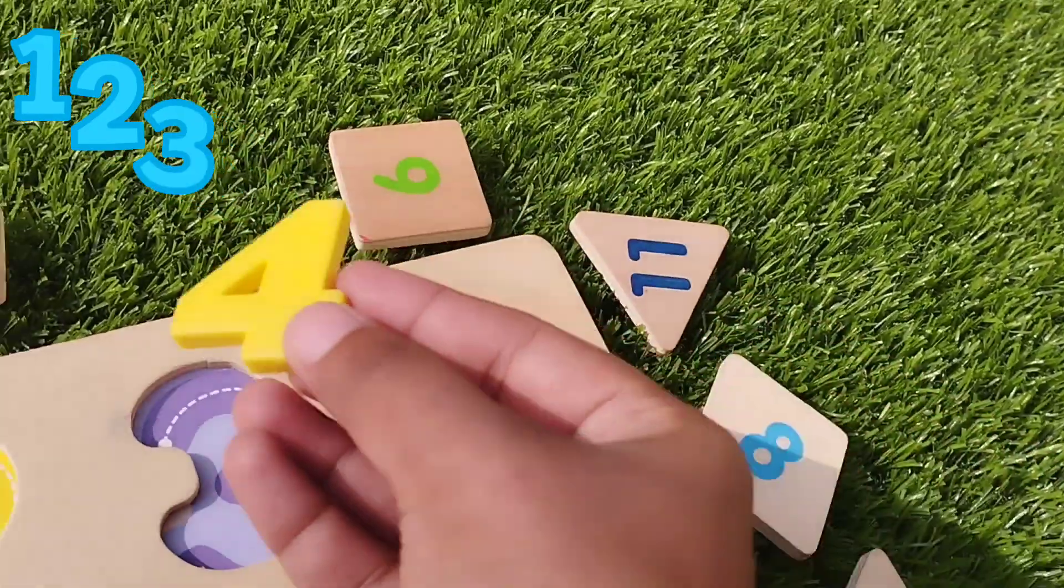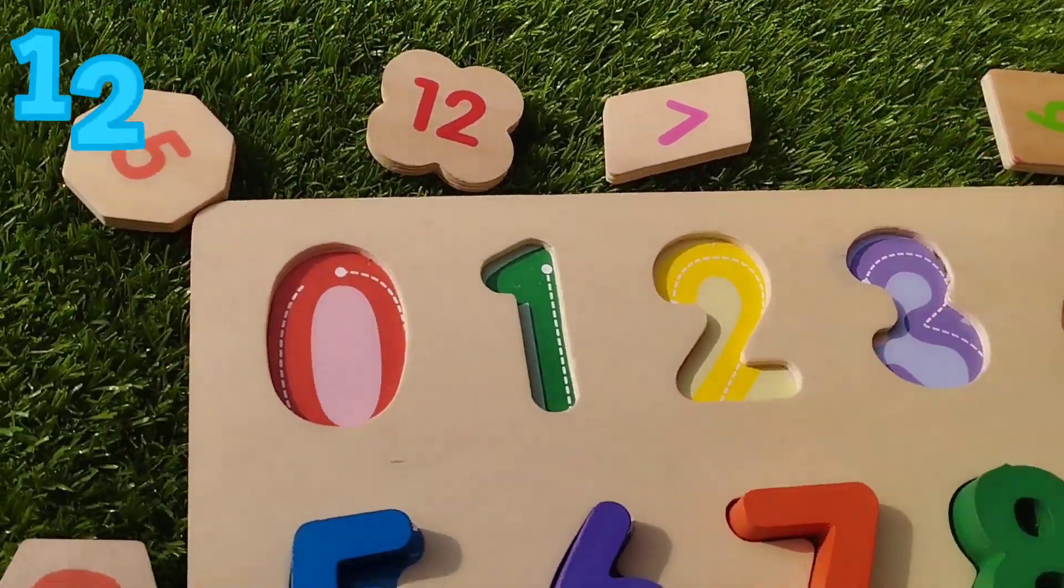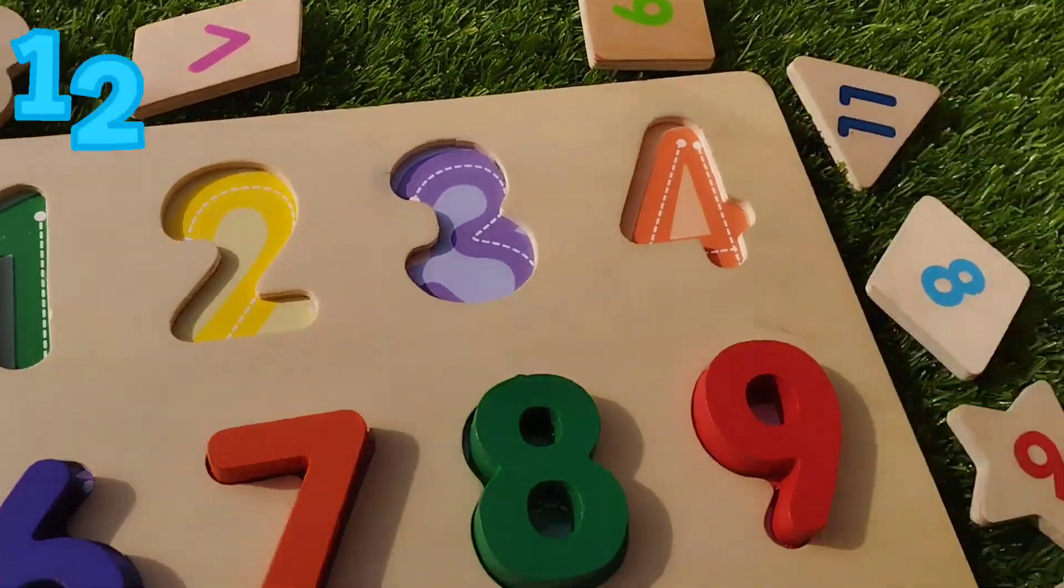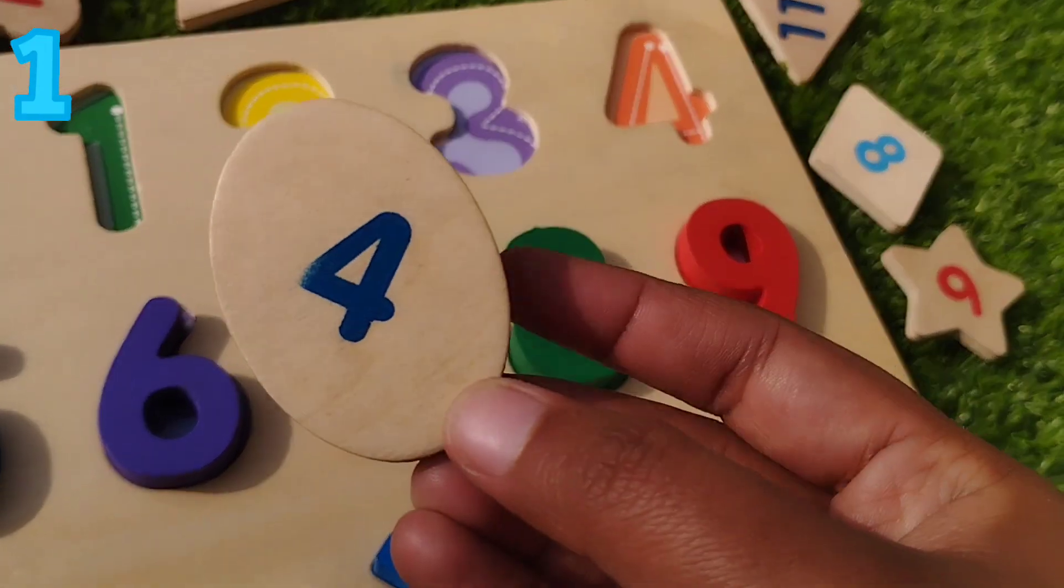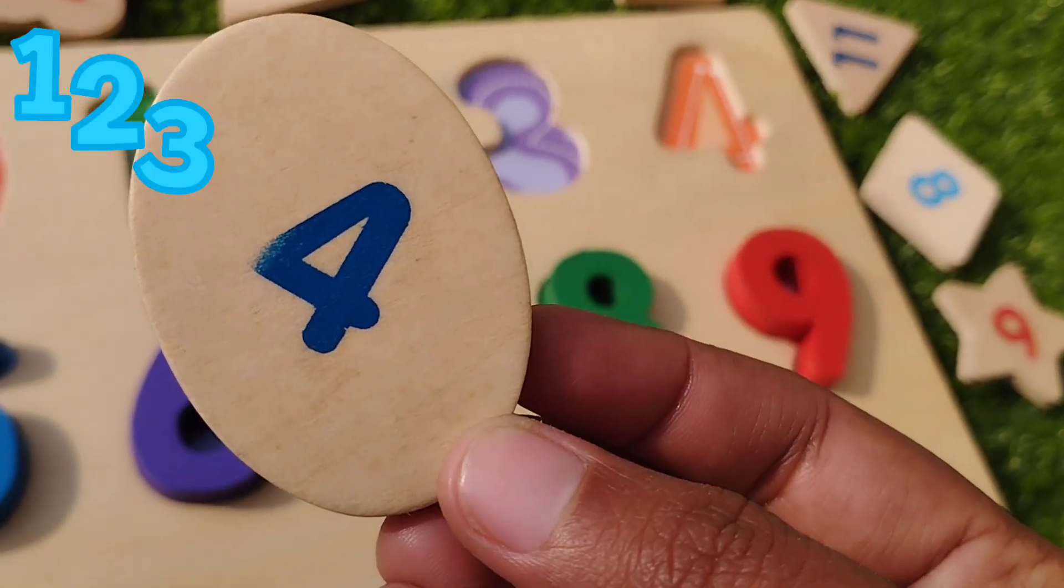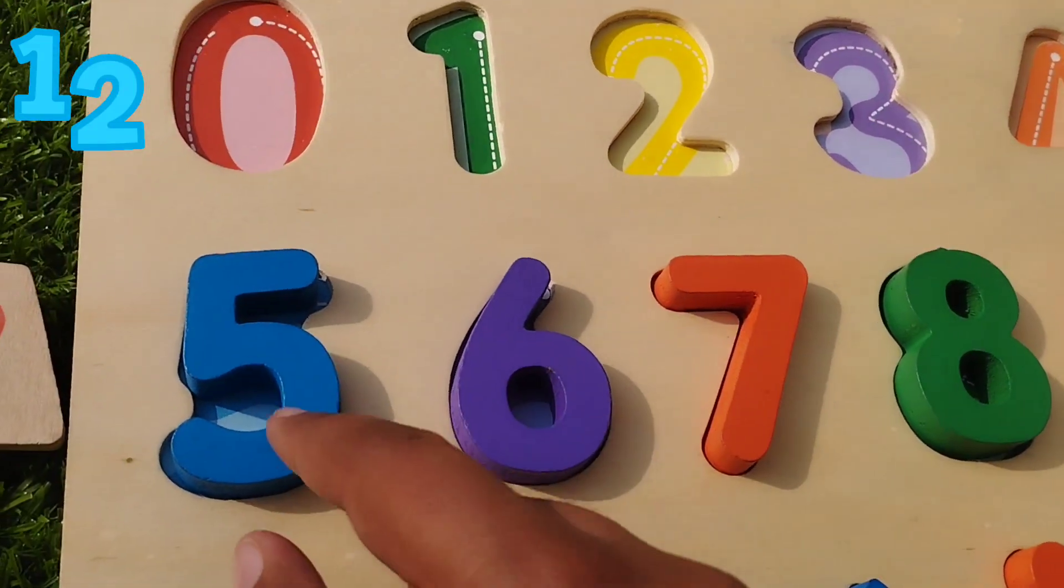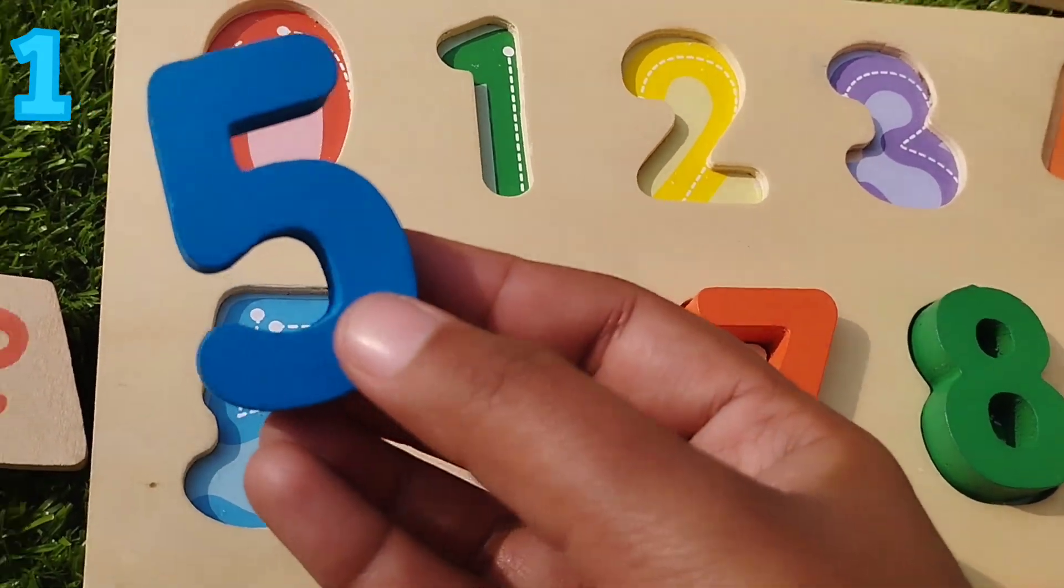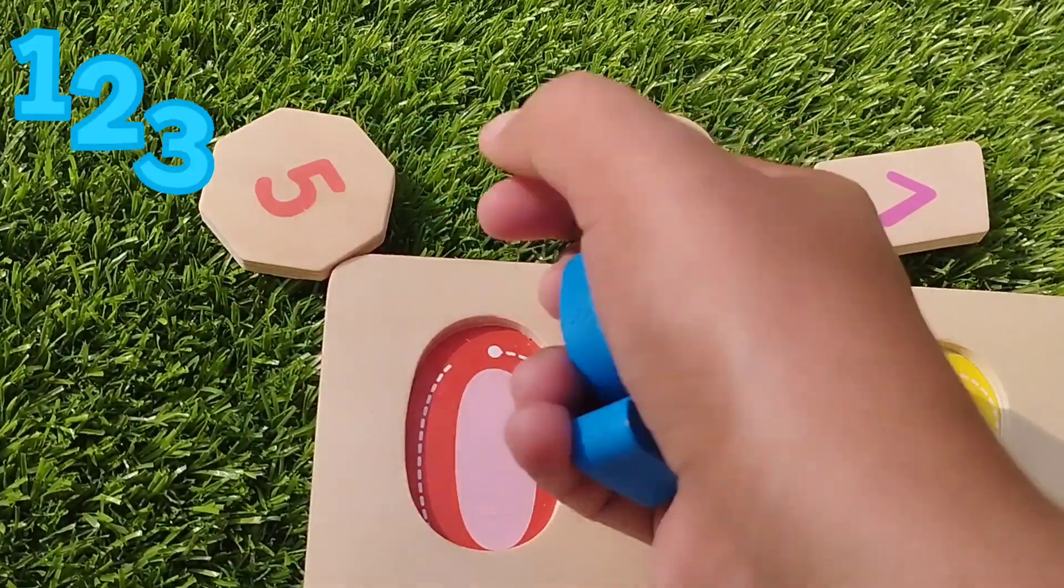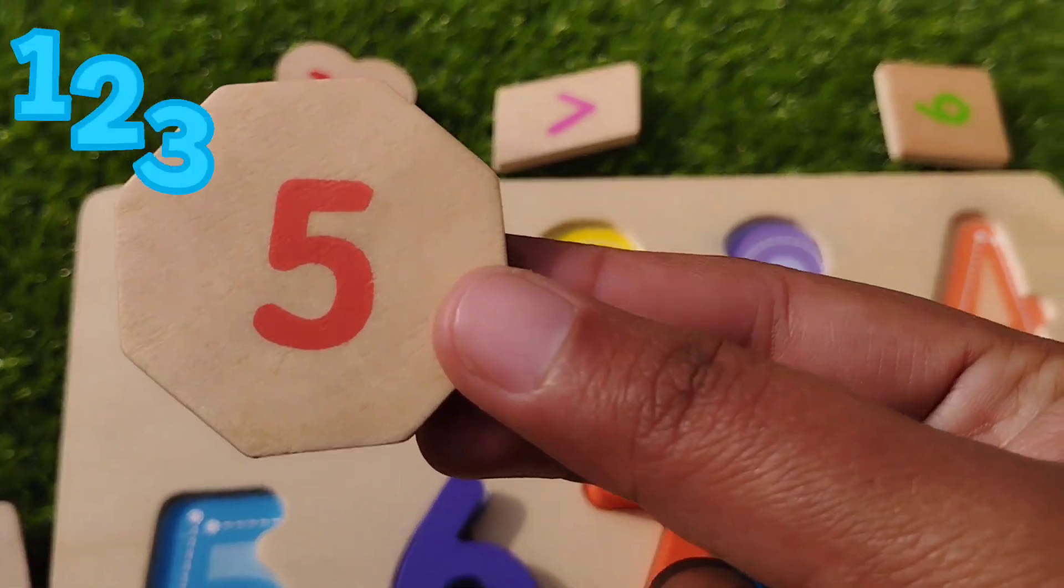Where is number 4? Number 4. Oval. This is oval shape. The next number is number 5. 5 is hexagon.